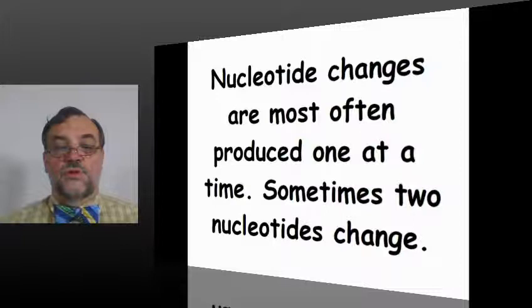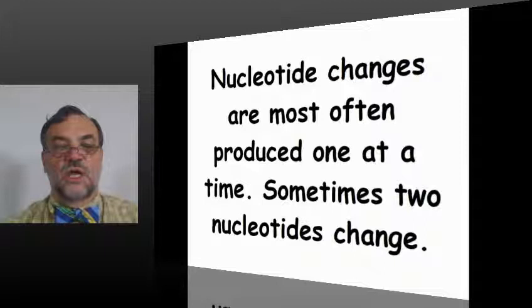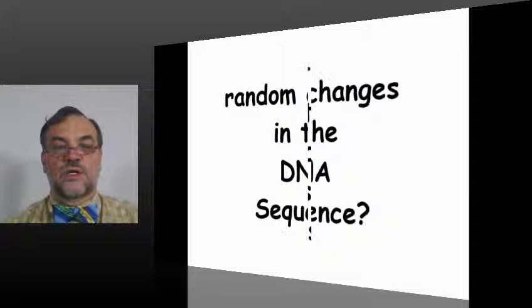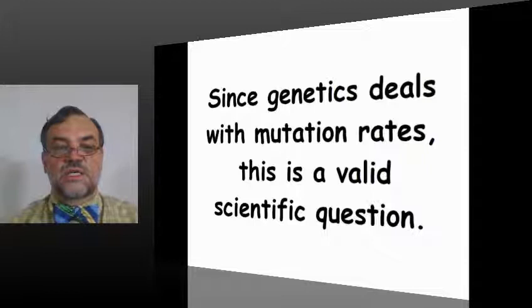Nucleotide changes are most often produced one at a time. Sometimes two nucleotides change. We're talking here about changes. We would say mutations. Normally, we see one nucleotide mutation at a time. The technical term for that being SNPs. Sometimes two nucleotides change in a specific gene or section of DNA that we may be looking at. So what are the probabilities that these specific DNA sequences occurred as a result of random changes in the DNA sequence?